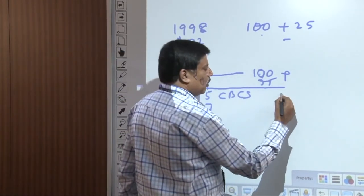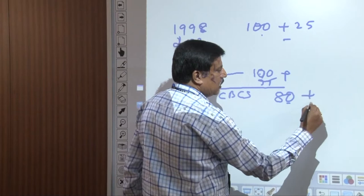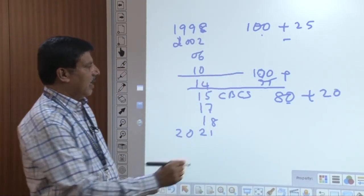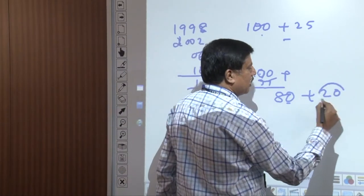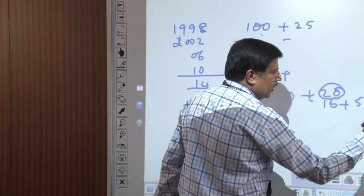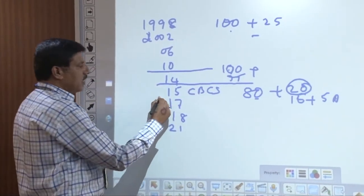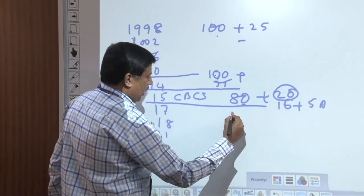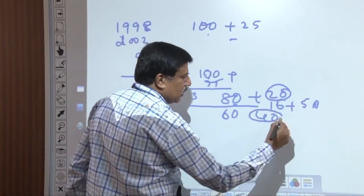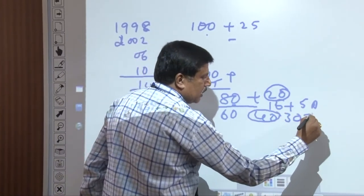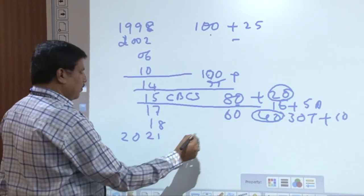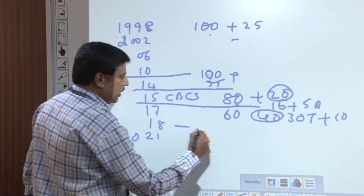In the 2017 scheme, the split became 60 marks for theory and 40 marks for internal — 30 marks for tests and 10 marks for assignment. The 2018 scheme followed the same pattern.